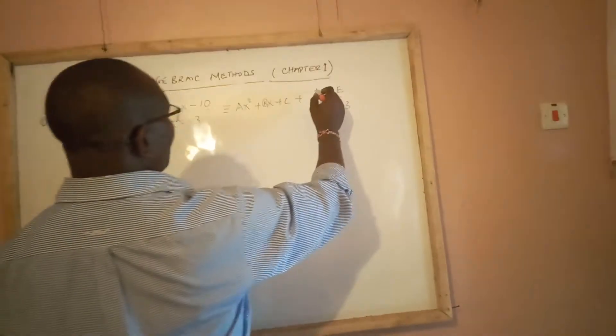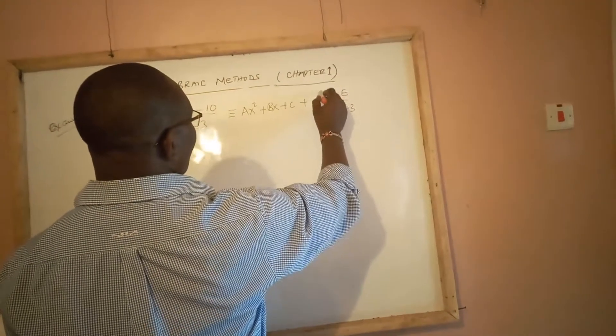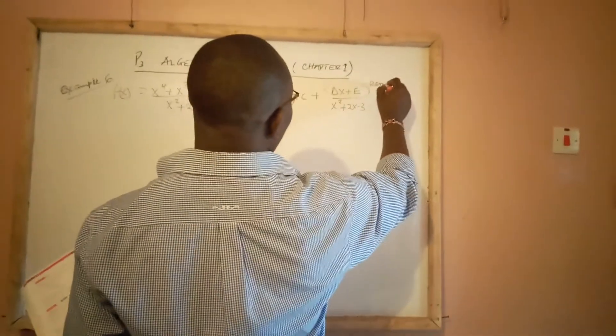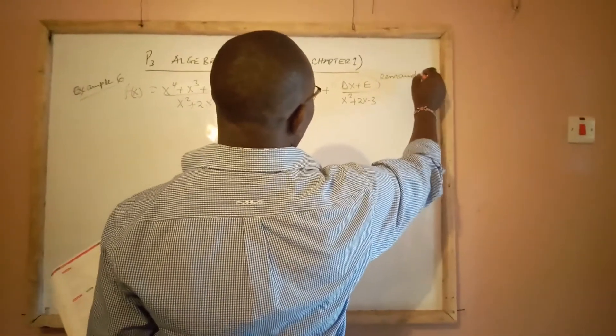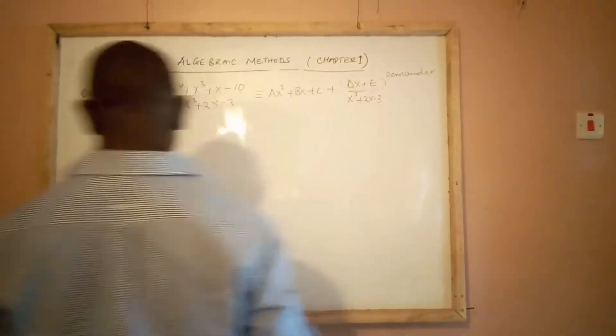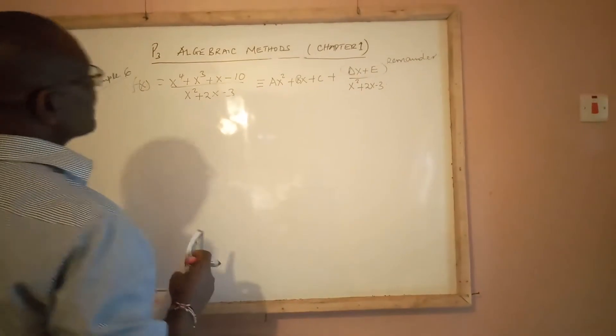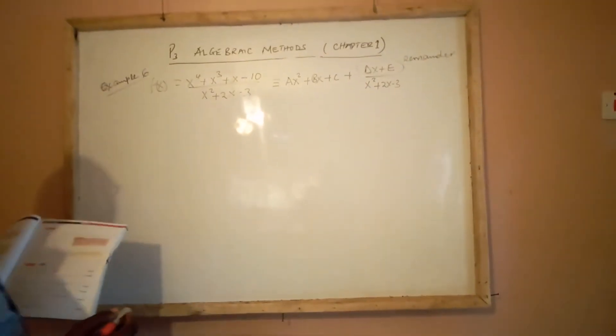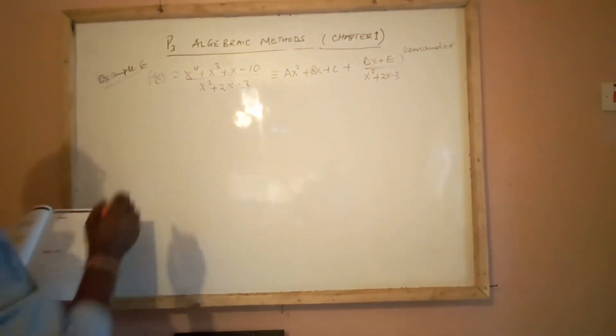Any time you see a term over the divisor, this must be the remainder. We can only realize the remainder by use of the long division method. So, without further ado,